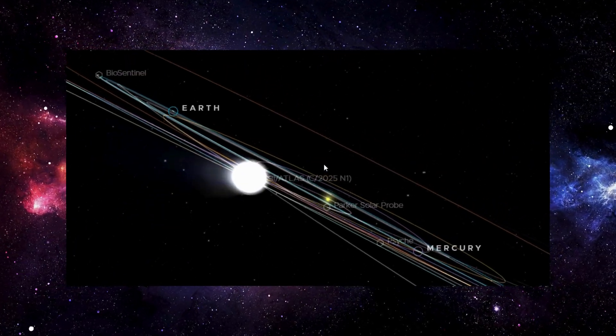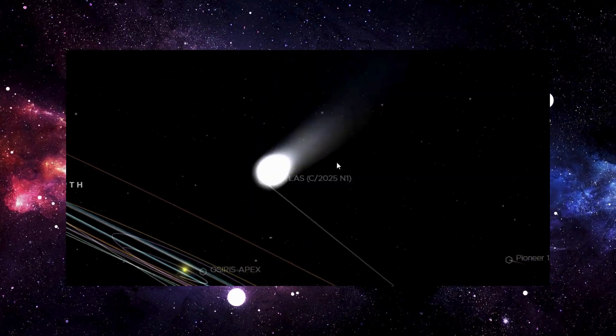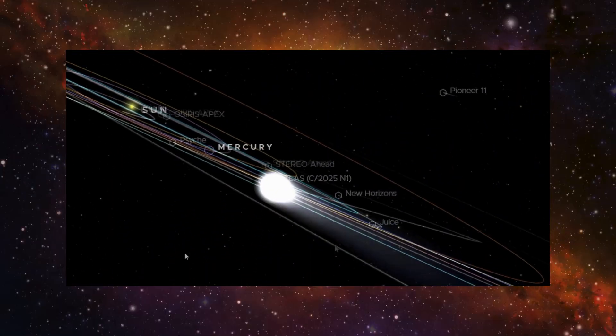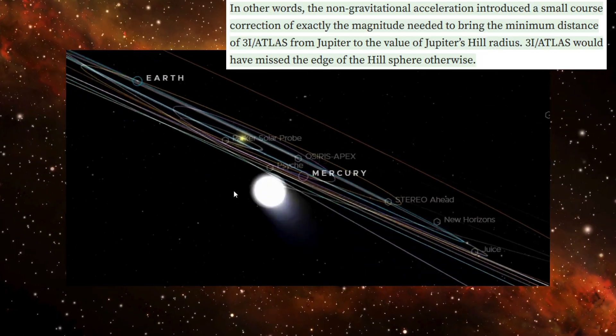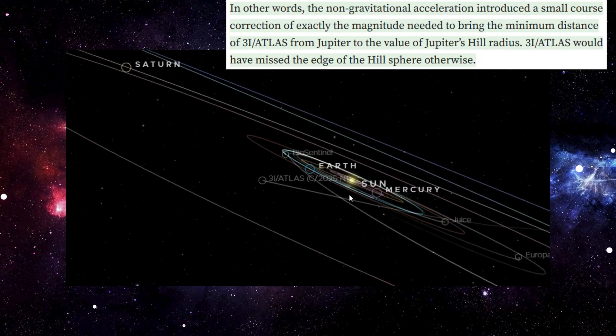Neither the Sun, nor Jupiter, nor any planet or known object can explain this force. The result? That mysterious acceleration shifted 3i Atlas's path by about 62,000 miles.